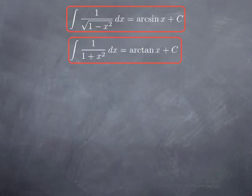Let's turn to integrals now. We've seen that the derivative of arcsin is 1 over square root of 1 minus x squared, and we can turn that around as an integral formula: the antiderivative of 1 over square root of 1 minus x squared is arcsin x up to a constant. Similarly, the derivative of arctan is 1 over 1 plus x squared, so the antiderivative of 1 over 1 plus x squared is arctan x up to a constant.